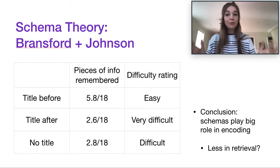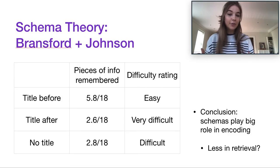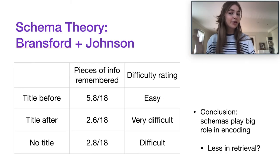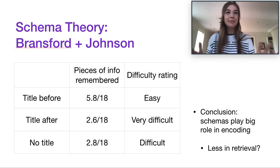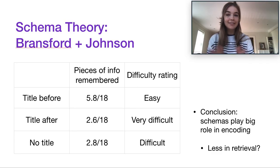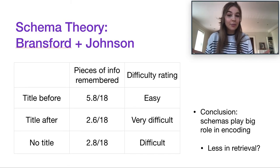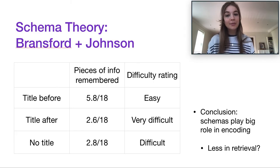Drawing all of schema theory together: schema theory is good because it shows how we interpret information and use it to make conclusions about the world. But schemas are quite vague and not strongly defined; there's no explanation of where schemas came from; the studies aren't particularly ecologically valid; and there's no known neural basis in the brain for schemas. So we need more information, and it remains a somewhat abstract concept.